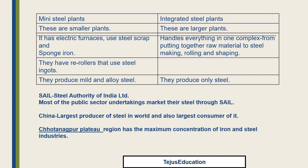Let's learn about the difference between a mini steel plant and an integrated steel plant. A mini steel plant is a smaller plant that has an electric furnace and uses steel scrap and sponge iron. Scrap helps control heat in the steel-making process, and sponge iron acts as a substitute for scrap.